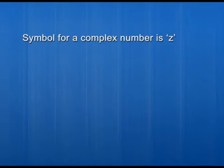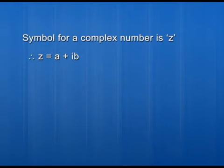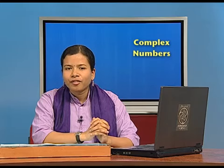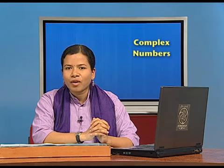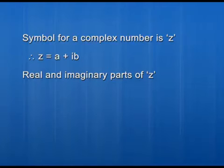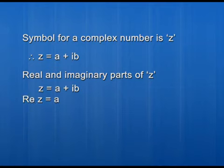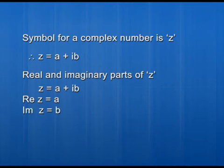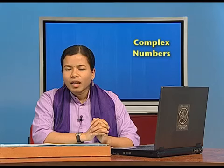Complex numbers are denoted by z, and therefore we write z is equal to a plus ib. Now let us come to the definition of real and imaginary parts of a complex number. Suppose we have z equal to a plus ib. Then the real part of z, denoted by Re(z), will be a, and the imaginary part of z, denoted by Im(z), will be b.